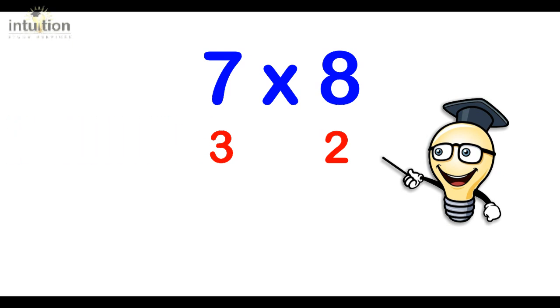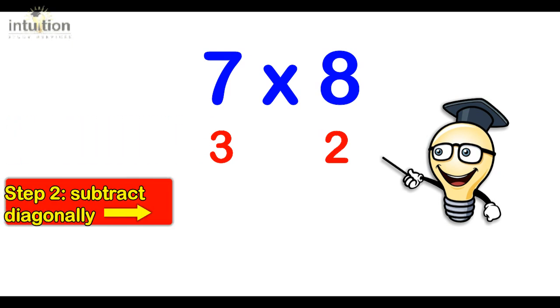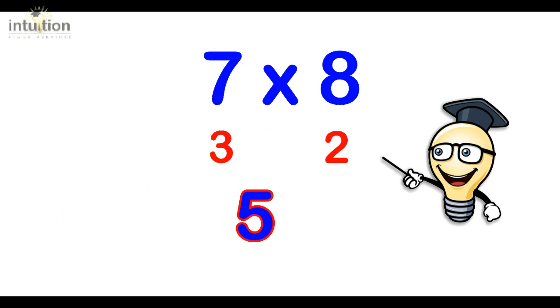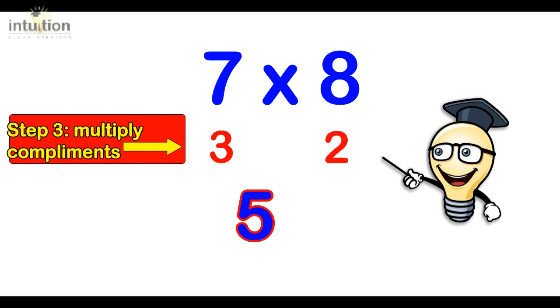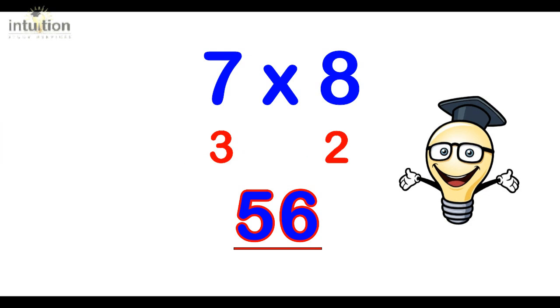Okay, so the second step is we subtract diagonally. So we can either do 7 take away 2 which gives us 5, but also 8 take away 3 gives us 5. It doesn't matter which one we choose. So that gives us the first part of the answer. And then the third step is we multiply these bottom numbers. So 3 times 2 is 6 and there is our answer, 56. That's how easy it is.